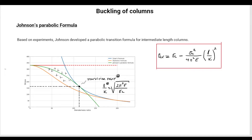This green line here is the parabola, and the touching point with Euler's curve is called the transition point. This determines a very interesting phenomenon. In the past I've talked about short columns and long columns, but here we're going to talk about when to use Johnson's approach and when to use Euler's approach, because this is one of the most widely used methods to design columns — a combination of two formulations known as the Euler-Johnson formula or approach.